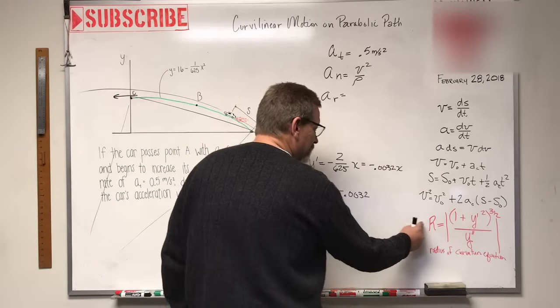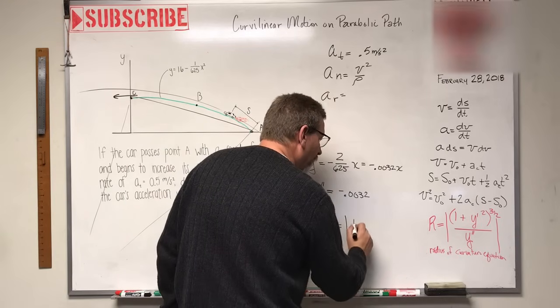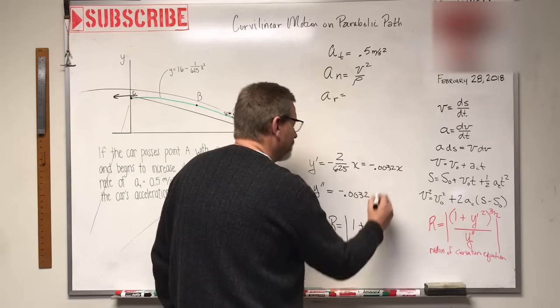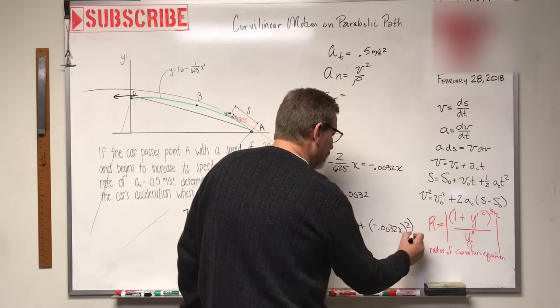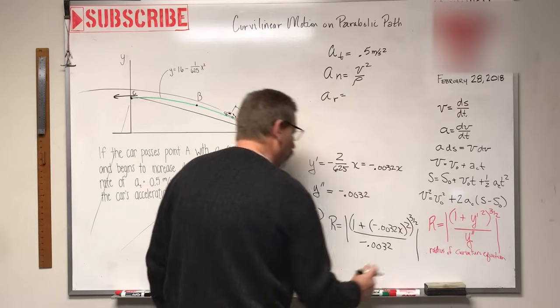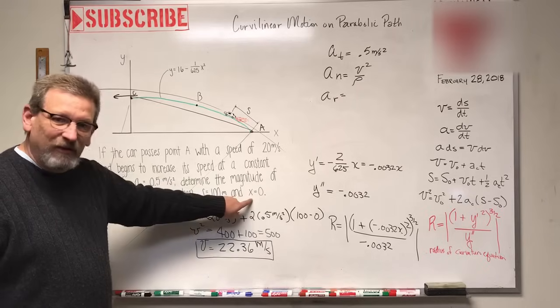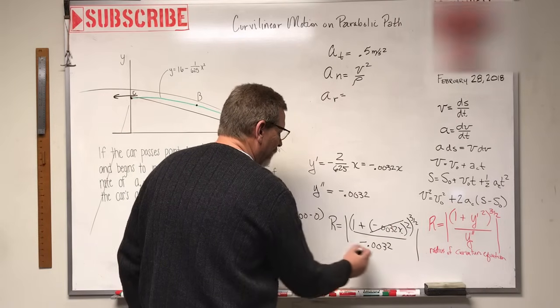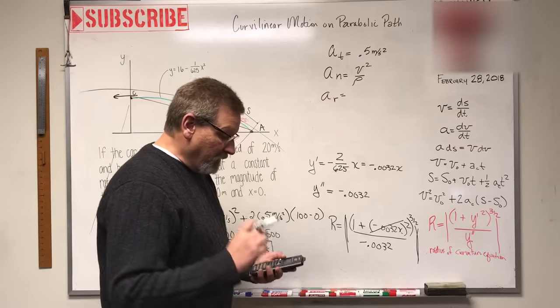Let's plug that into this equation here and see what we get for our radius of curvature, which we're going to call ρ. So ρ is equal to the absolute value of one plus that negative 0.0032x all squared, and then that whole thing is to the three halves, divided by y double prime which is just negative 0.0032. Now what is x for this problem? Find the car's acceleration when s is 100 and x equals zero. If I put a zero in there, this whole term is just zero, so I'm left with one divided by 0.0032. The answer is equal to 312.5.